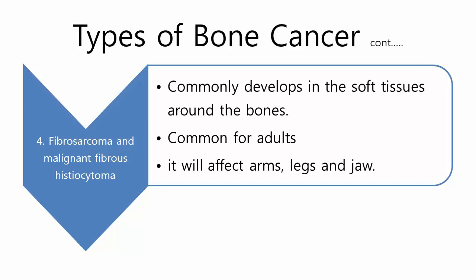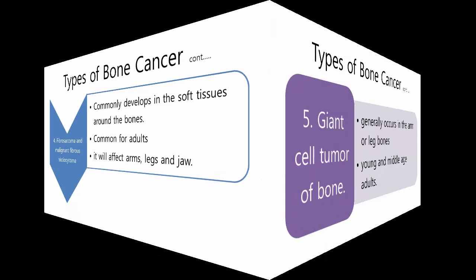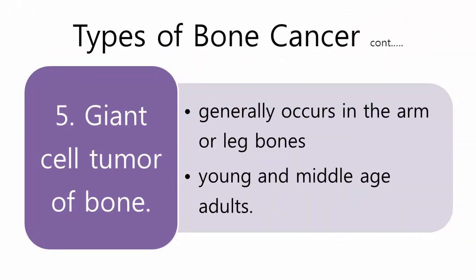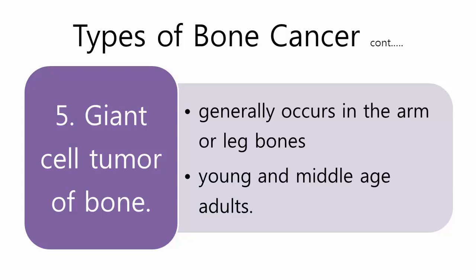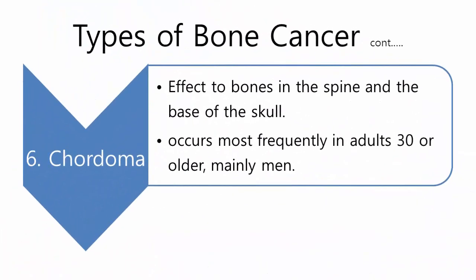Fibrosarcoma and malignant fibrous histiocytoma commonly develop in the soft tissues around the bones, and are more common in adults, affecting the arms, legs, and jaw. Giant cell tumor of bone generally occurs in the arm or leg bones, mostly in young and middle-aged adults. Chordoma affects bones in the spine and the base of the skull, occurring most frequently in adults 30 or older, mainly men.